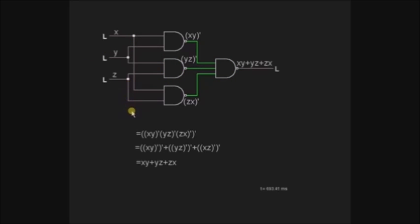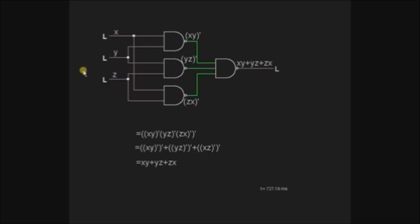This circuit detects the majority logic of the inputs. If out of three inputs the majority logic is high, then the output will be high. If the majority logic is low, then the output will be low. Out of three inputs, if more than one input is high or low, then the output will be high or low respectively. If the more number of inputs are high, then the output is high. If the more number of inputs are low, then the output is low.